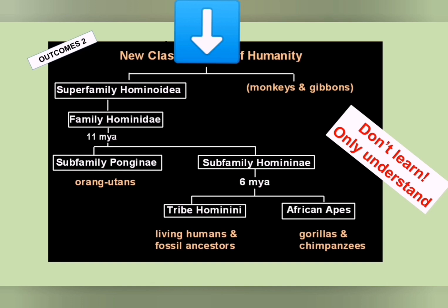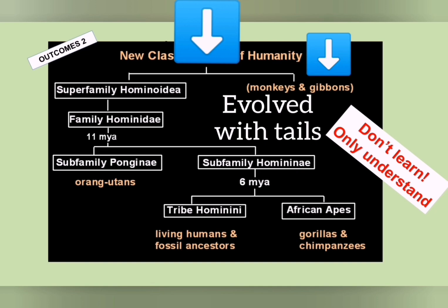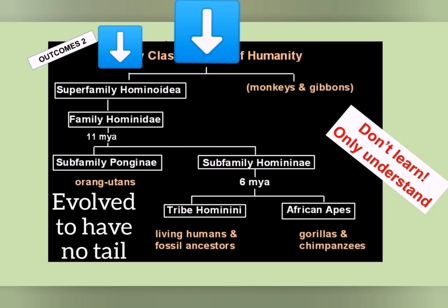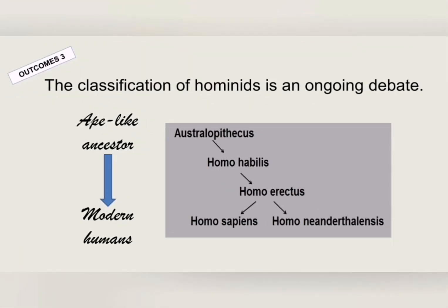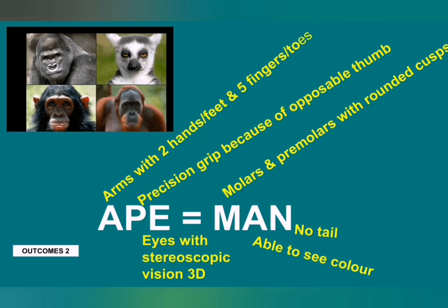As we studied with allopatric speciation, a single ancestral population splits into two. According to this diagram, monkeys and gibbons that have tails is one group this ancestral population evolved into, while modern humans and apes is the other group. Humans and apes evolved from an ape-like creature — an ancestral population that had traits that were more ape-like and some that were more human-like. These shared traits are what places us in the same ape-like ancestry group of hominids.